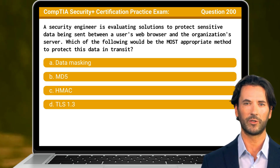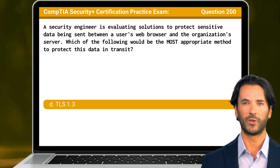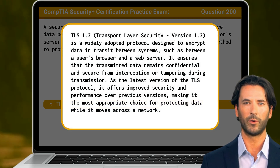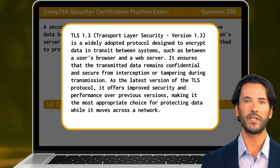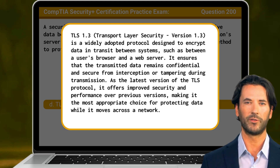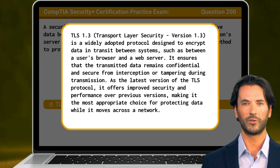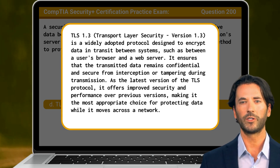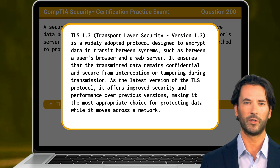The answer is D. TLS 1.3. TLS 1.3 is a widely adopted protocol designed to encrypt data in transit between systems, such as between a user's browser and a web server. It ensures that the transmitted data remains confidential and secure from interception or tampering during transmission. As the latest version of the TLS protocol, it offers improved security and performance over previous versions, making it the most appropriate choice for protecting data while it moves across a network.